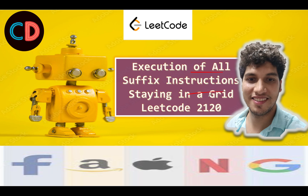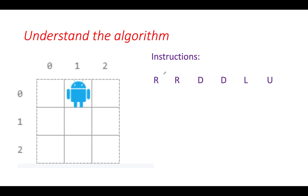This is LeetCode problem 2120, Execution of All Suffix Instructions Staying in a Grid — a medium level question. Let's take the example where the robot's starting position is (0,1) and the input instructions are R, R, D, D, L, U. For the 0th index, the first instruction is R, so the robot moves right.